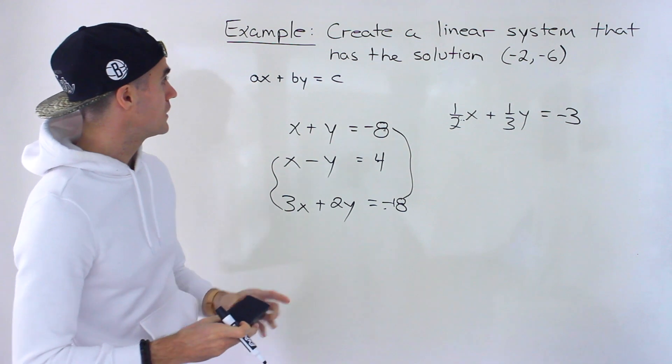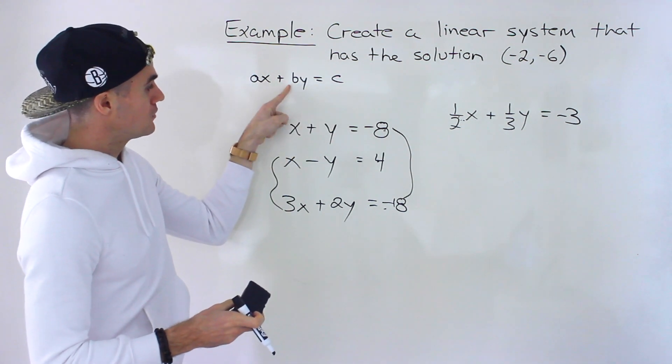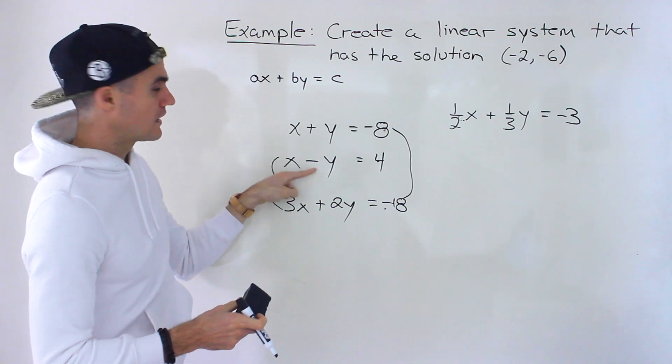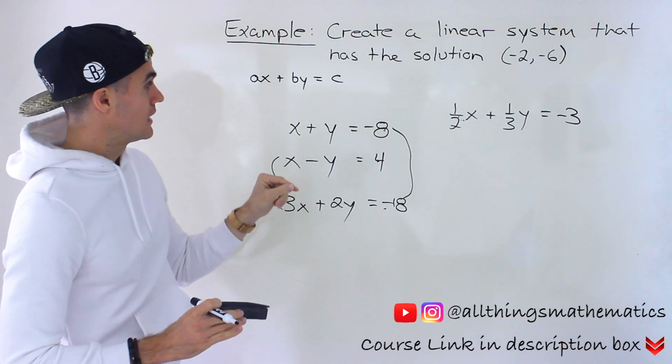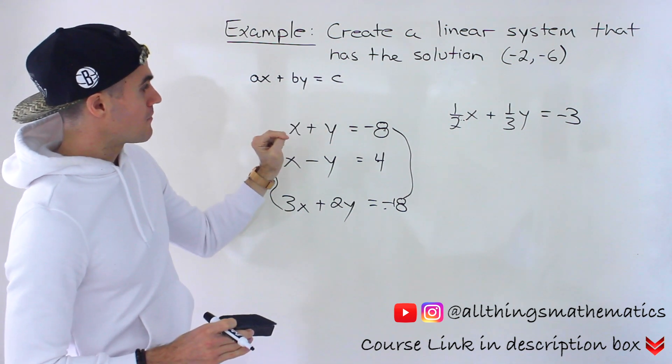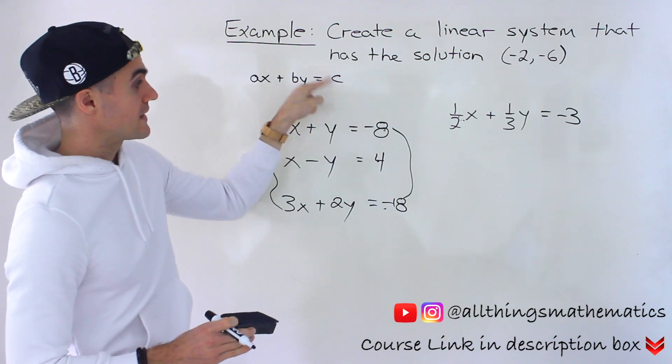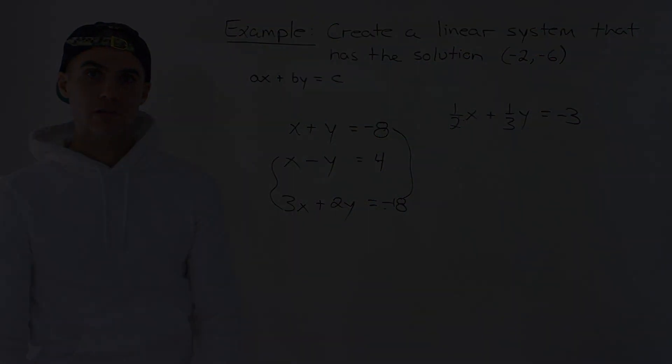So that's personally how I do it. I put it in this format, and then I just pick any A and B value, 1 and 1, 1 and negative 1 are really easy to pick if there's no other restrictions, and then just make sure that you solve for what that C value should be, and then that's how you could get your 2 lines.